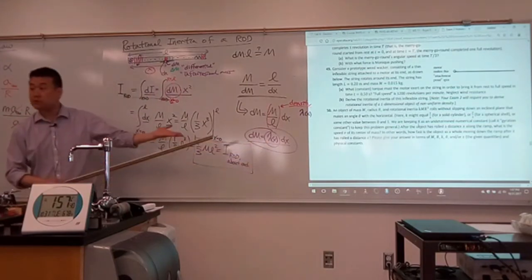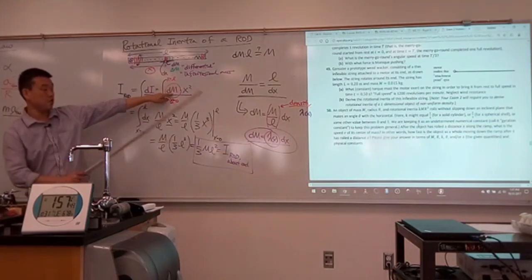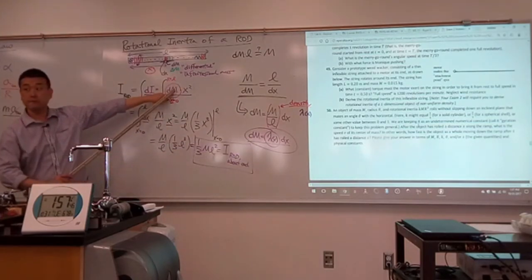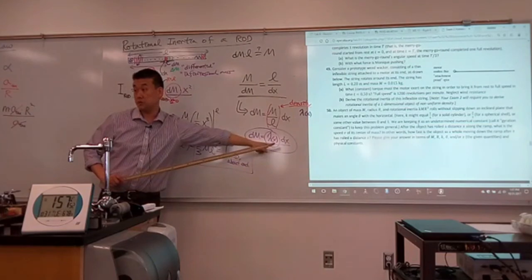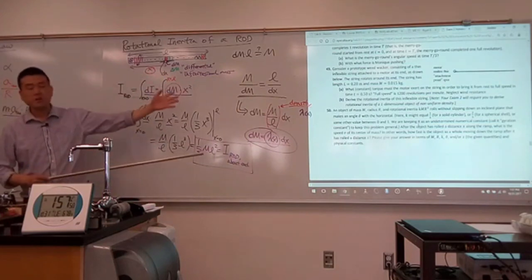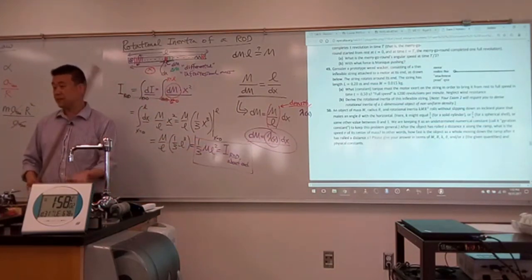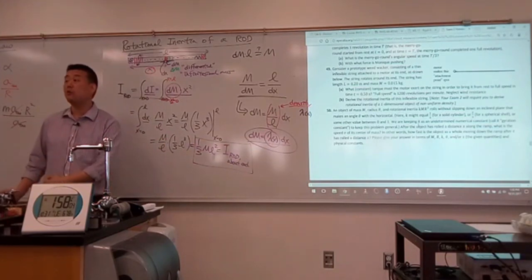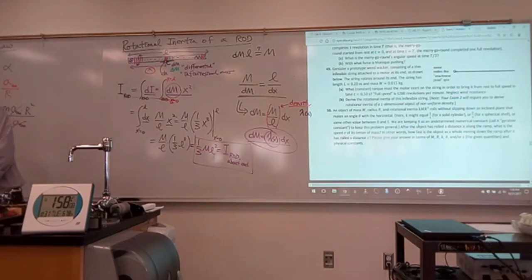Conceptually, it's not any harder. Instead of plugging in M/L for dm, you'll be plugging in lambda(x)·dx. The whole point of having variable density is that if you are planning on simply memorizing formulas, just know that it won't work — the problem is written in a way that there's no formula you can plug in.